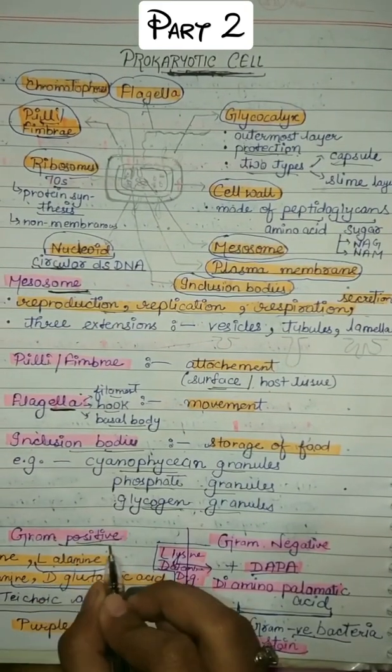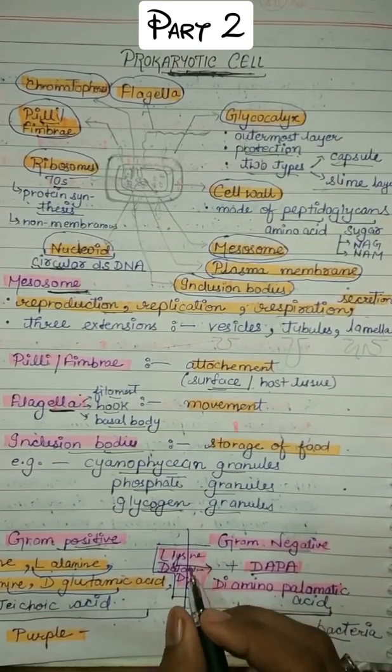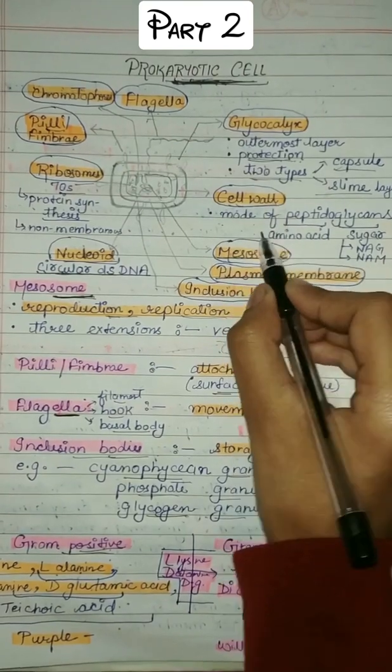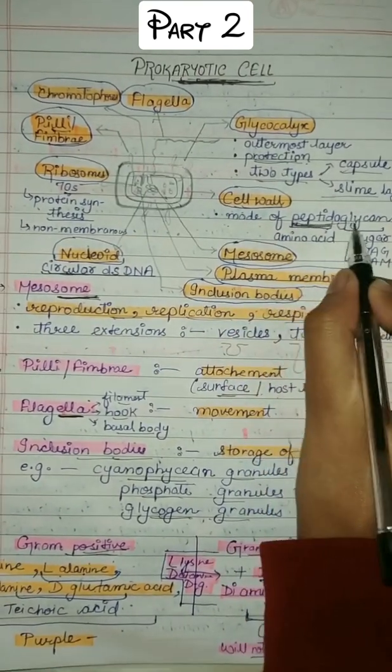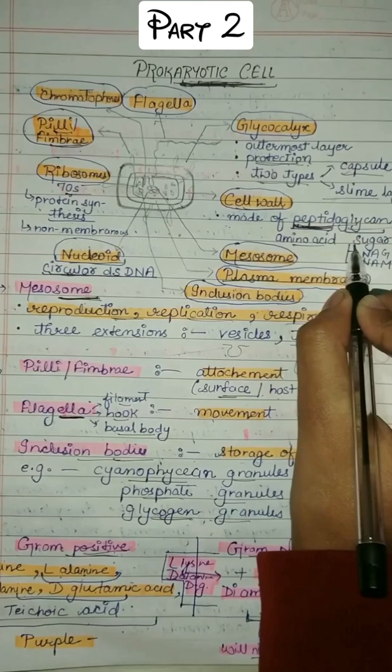Now we have to learn about gram staining. So what is gram-positive and gram-negative bacteria? We have learned that bacteria has a cell wall which is made of peptidoglycan. Peptidoglycans are amino acids and sugars.